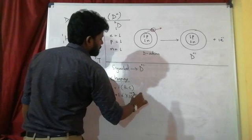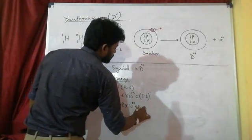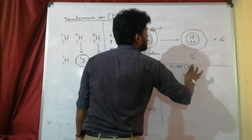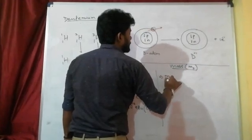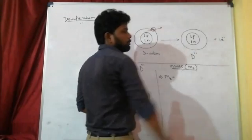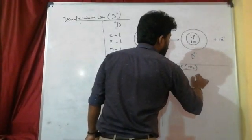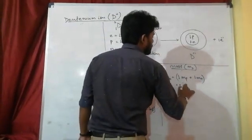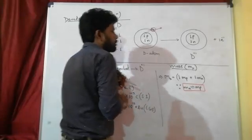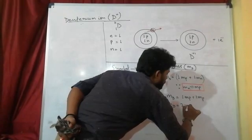The charge in SI system is plus 1.6 into 10 to the power minus 19 coulombs, and there is also the CGS system value. For the mass of Deuterium Ion, we denote it as MD. Deuterium consists of one proton and one neutron, so MD equals 1 times mass of proton plus 1 times mass of neutron. Since mass of neutron is almost equal to mass of proton, we substitute: MD equals 1 times mass of proton plus 1 times mass of proton, so MD equals 2 times mass of proton.